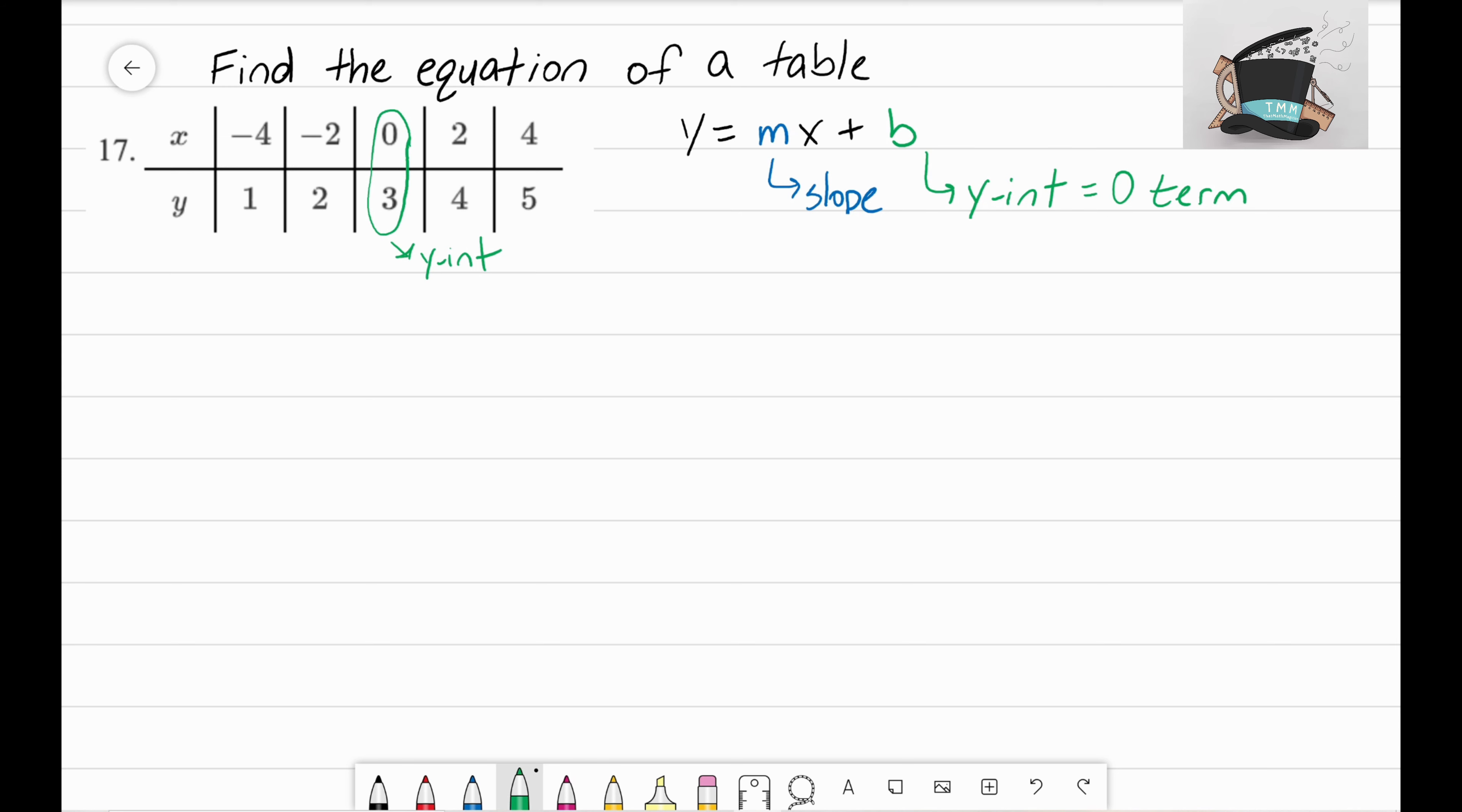The last thing we need to find now is our slope. This is our equation. We now know that y equals—we don't know what our slope is yet—mx plus, but we do know that our y-intercept is three.